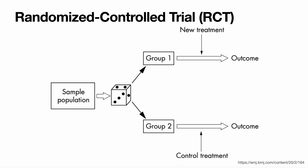The process of a randomized controlled trial is just that basic experimental design. You have a randomly selected sample population, and you randomly assign them to different groups. In this case, we have two groups: group one is getting the treatment, and group two would get the control treatment — the standard of care — to compare the new treatment against. We would be looking at the outcomes and comparing the differences between the two groups.